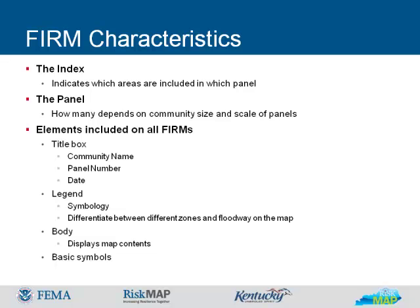When a FIRM contains multiple panels, the flood map will not fit on one page. The number of panels depends on the community size and the scale of the panels. Several elements are common to all flood insurance rate maps. The title box includes the community name, panel number, date, and other necessary identifiers. The legend provides information explaining the symbology of the map panel and allows the user to differentiate between different risk zones and the floodway. The body of the map displays the map content. On an index, the body will usually only display primary features like major roads and corporate limits. On a panel, there will be more detail, including secondary roads, bridges, flood hazard information, and often an aerial photo in black and white.